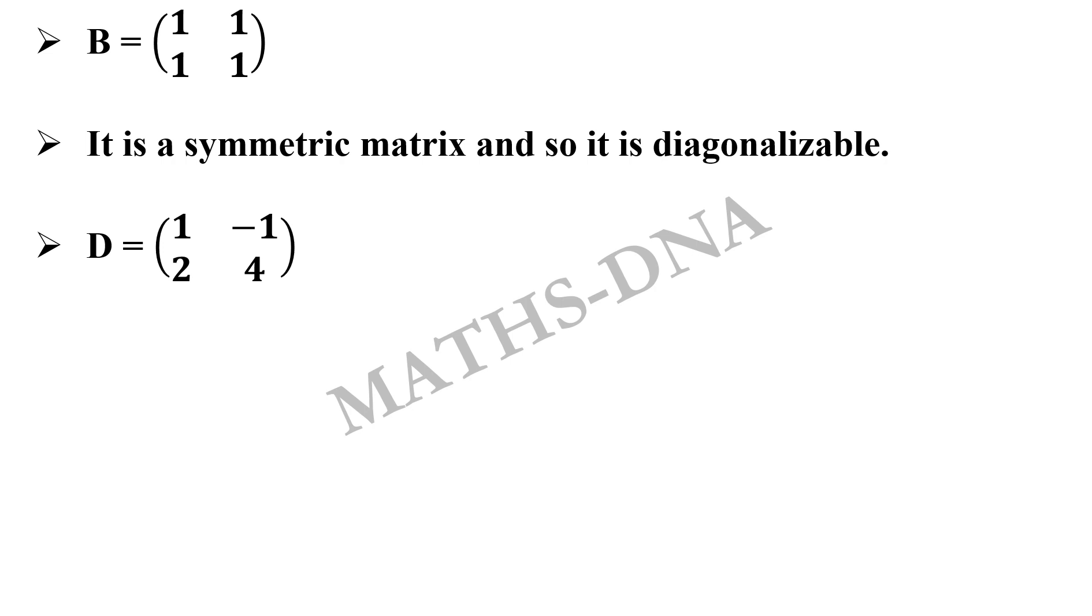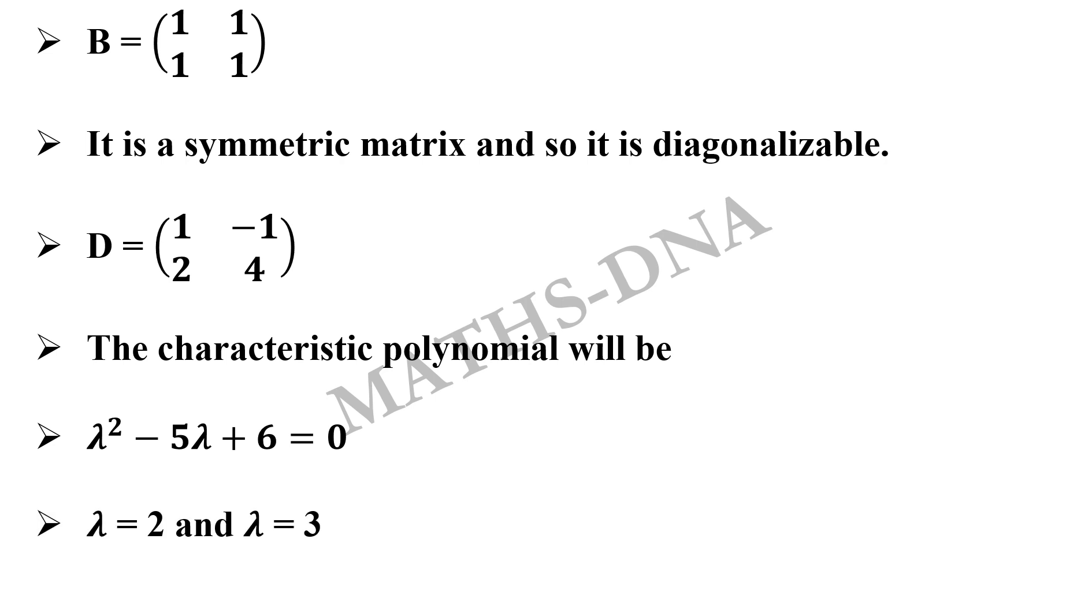Now option D, 1, negative 1, 2, and 4. Here we find the characteristic polynomial. That is, lambda squared minus 5 lambda plus 6 equals to 0. Now this will be our characteristic equation and the roots will be 2 and 3.